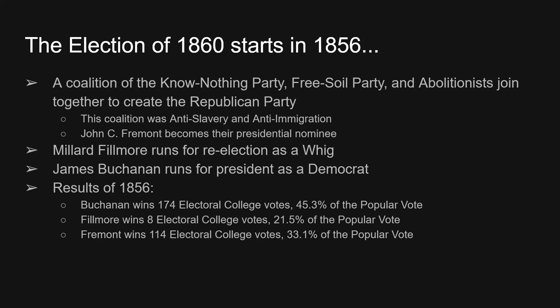The election of 1860 really starts in 1856. You've got a coalition of the Free Soil Party and abolitionists who oppose the Kansas-Nebraska Act, and they're going to form a brand new party known as the Republican Party. Along with the Free Soilers and the abolitionists, you have members from the dying Know-Nothing Party who oppose slavery and immigration joining with the Republicans. The Republicans are going to nominate John C. Frémont, who is the Oregon Trail guide and the one who surveyed the California Trail.